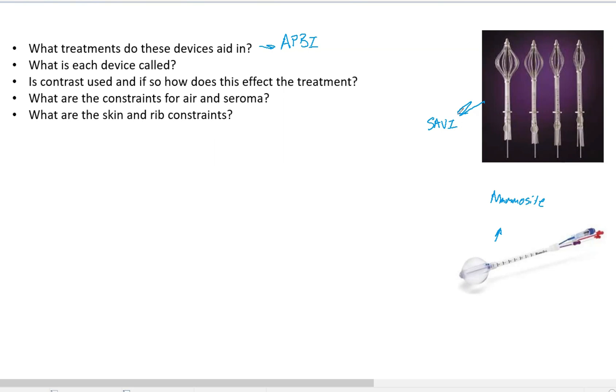We also have the SAVI up here. This is the Strut Assisted Volume Implant, that is what SAVI stands for. Now this can be expanded to different diameters as you see in this picture. Some are kind of skinny and not very big, and other ones get very large and can take up a lot of volume. That allows for the highest degree of optimization. It leads to dose underestimation however because the center is filled with air, so it underestimates dose about three to four percent.